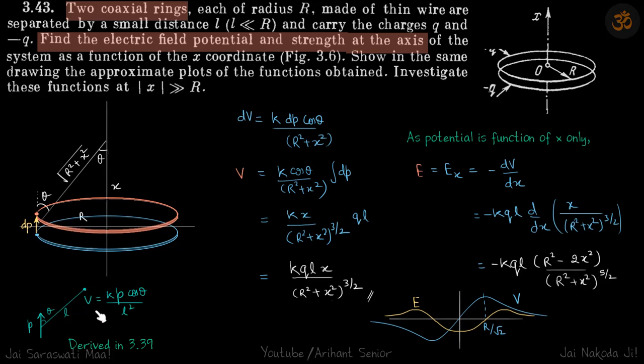We are going to use this result for potential in a dipole at an angle theta and distance L. Potential is K p cos theta by L square. We have already derived it before, we are going to use this.